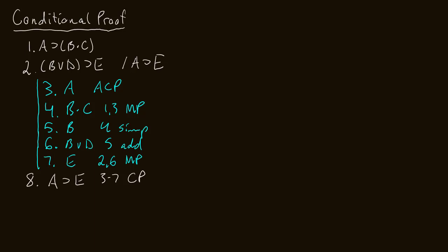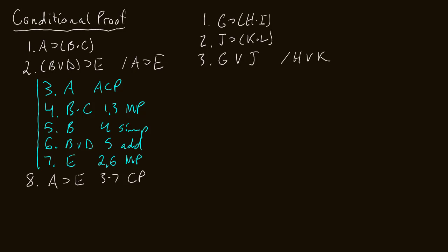Now let's do another one — there's nothing more to this, we just want to hammer it in with exercise. Our first premise for the next problem is: if G then H and I. Our second premise is: if J then K and L. And number three is: G or J. Our conclusion which we'll try to reach is H or K.